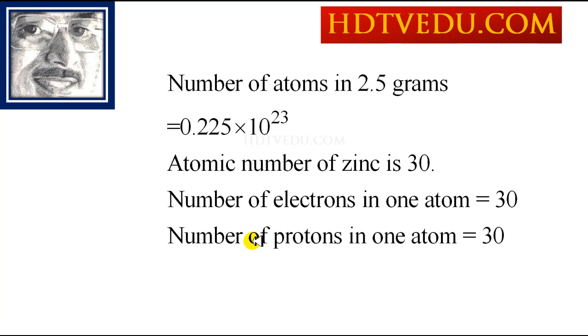So the number of atoms in 2.5 grams is 0.225×10^23. The atomic number of zinc is 30.